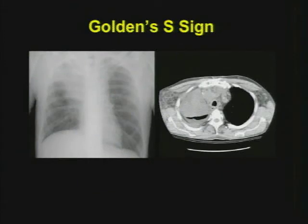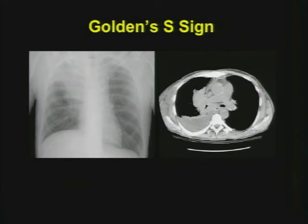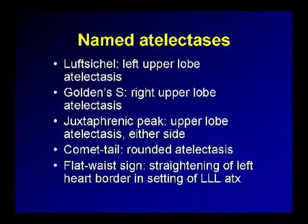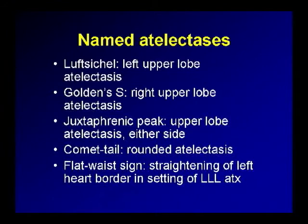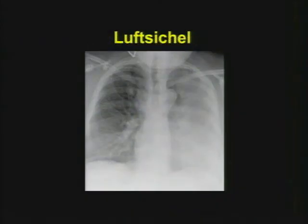Here is the CT scan from this patient. Don't stick your biopsy needle into the atelectatic area unless you're seeing something else that suggests there's a mass there — the mass is typically going to be around the hilum, so get to the hilum with your needle or a bronchoscopist's needle. Among the named atelectasis patterns: the Luftsickel or air sickle from German for left upper lobe atelectasis; Golden's S sign; the juxtaphrenic peak of apical volume loss, often seen with tuberculosis or head and neck radiation with scarring; the comet tail, related to rounded atelectasis; and the flat waist sign suggesting left lower lobe collapse.